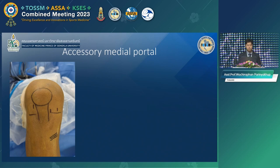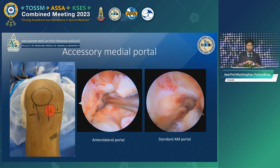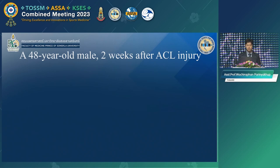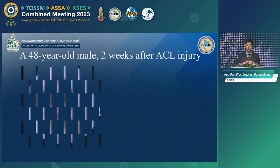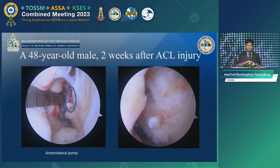The technique uses three portal techniques and places the camera in the standard anteromedial position. In this case, you can see the entire lateral wall of the intercondylar notch, including the femoral insertion site of the AM and PL bundle. The example case is a 48-year-old male two weeks after ACL injury. From the anterolateral portal, the insertion site looks like a circle, but when you place the camera anteromedially, the femoral footprint is oval-shaped and longer than it appears from the anterolateral portal.